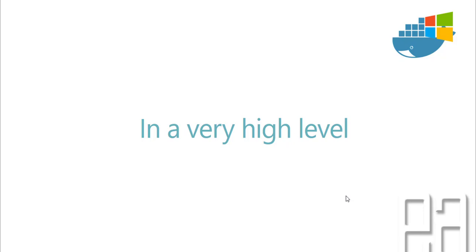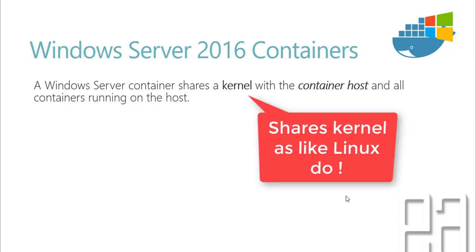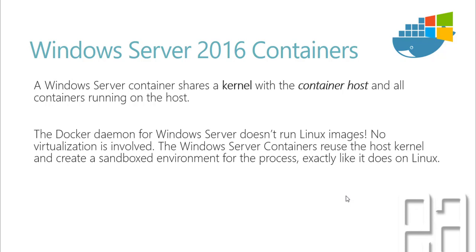At a high level, let's look at the difference between Windows Server 2016 containers and Windows 10 containers. Windows Server containers share a kernel with the container host and all containers running on the host. So if you have 10 or 15 containers running on Docker, they share the same kernel as the host operating system, which is Windows Server 2016. The Docker daemon for Windows Server doesn't run a Linux image — no virtualization is involved. Windows Server containers reuse the host kernel and create a sandboxed environment for processes, exactly like it does on Linux.